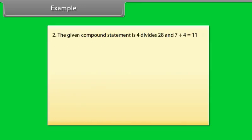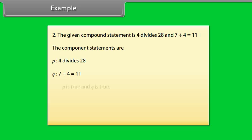(2) '4 divides 28 and 7 plus 4 is equal to 11.' Component statements: P — 4 divides 28; Q — 7 + 4 = 11. P is true and Q is true; hence P and Q is true.